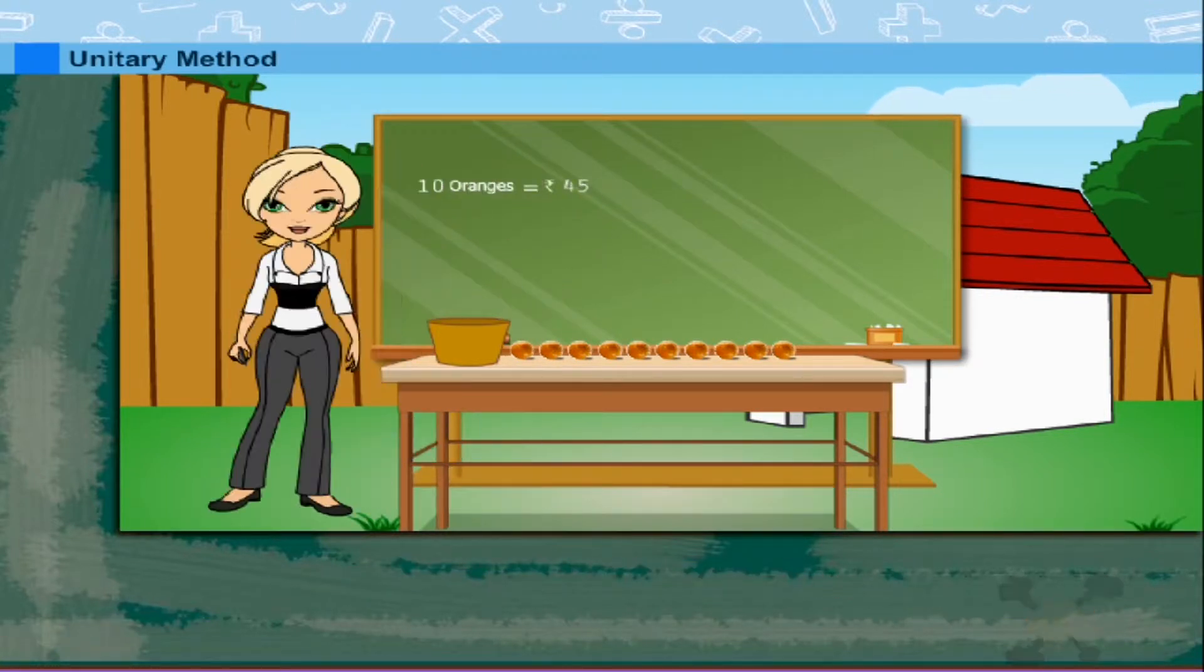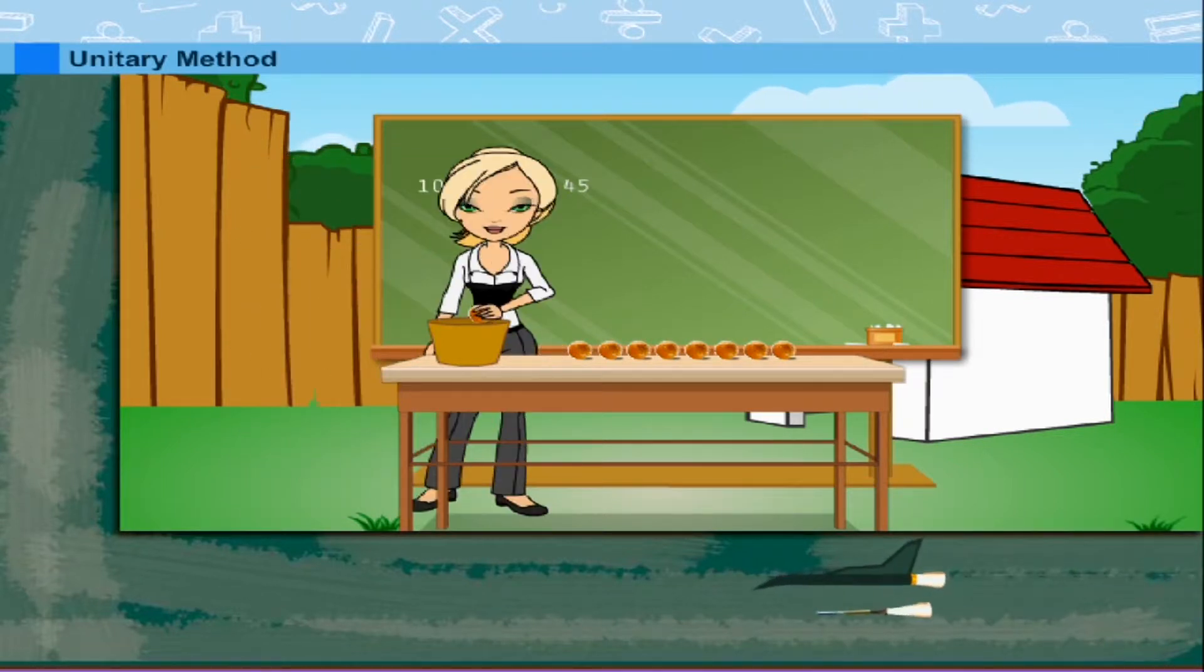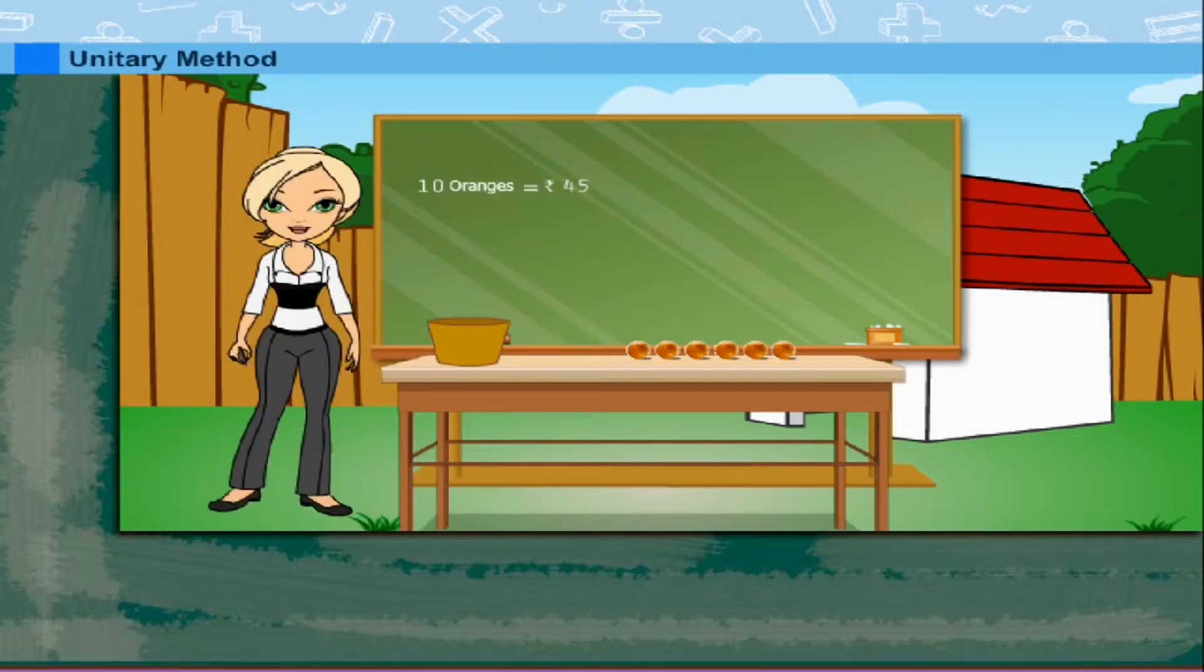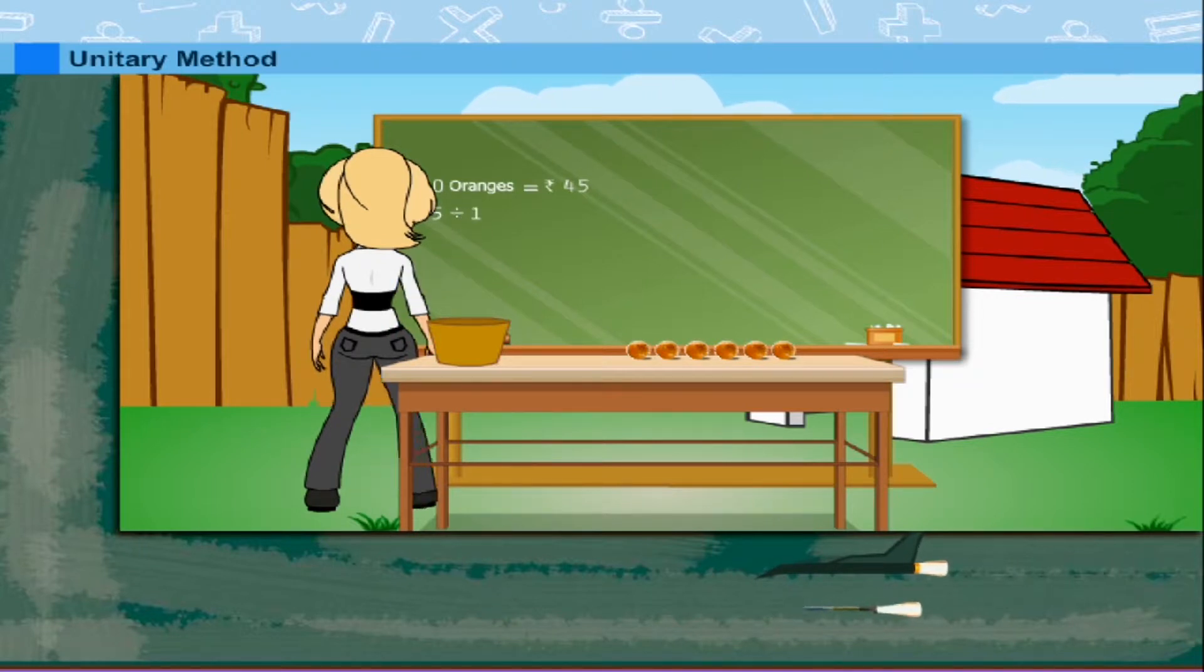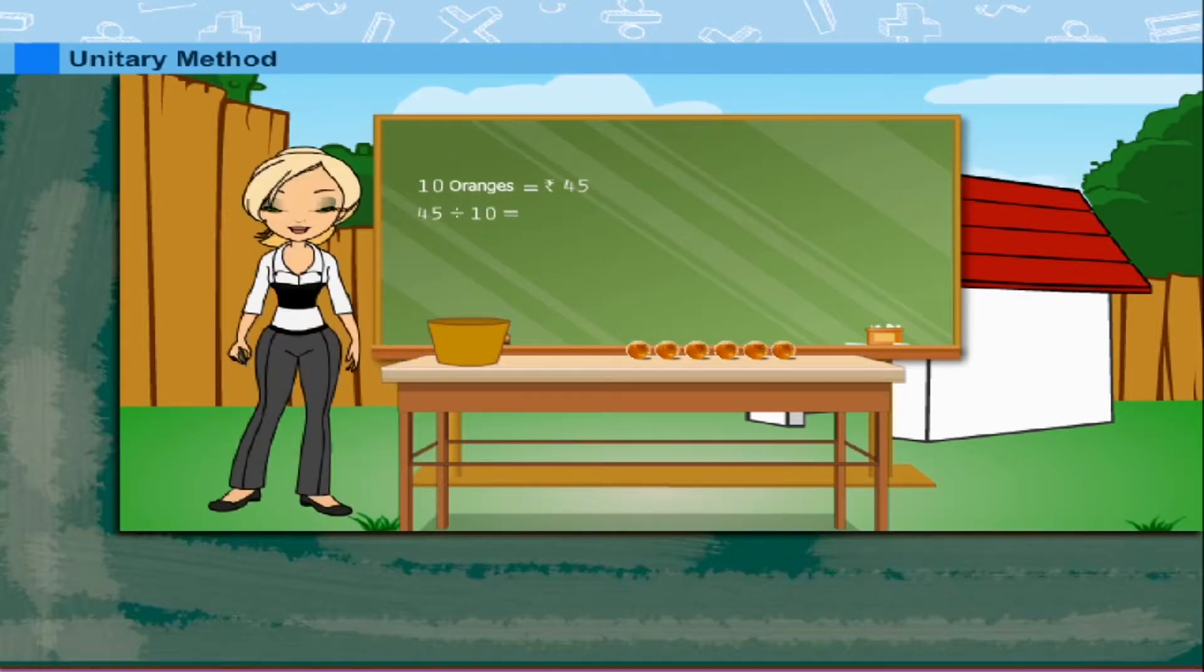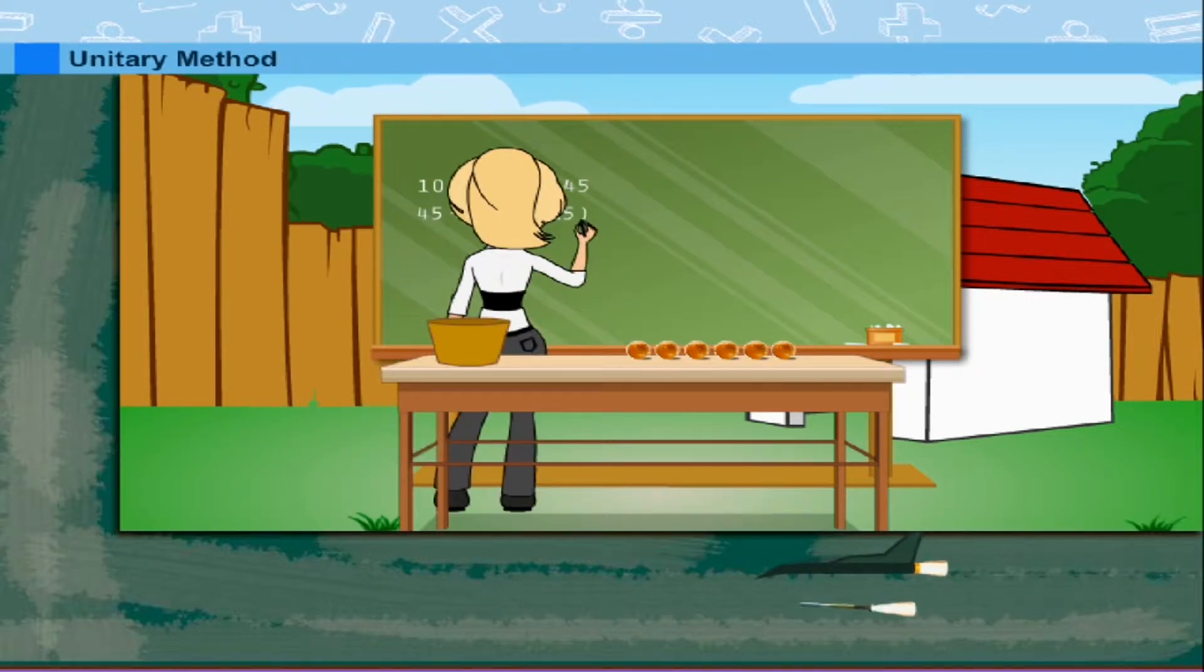Rosie ma'am wants to know the cost of 4 oranges that she has picked. Rosie ma'am now calculates. She divides Rs.45 by 10 to find the cost of 1 orange. It is Rs.4 and 50 paise.